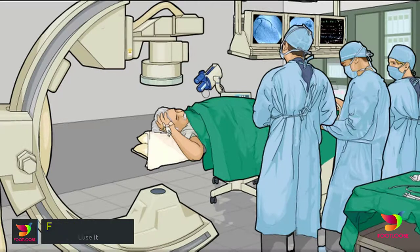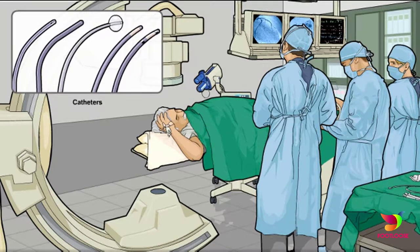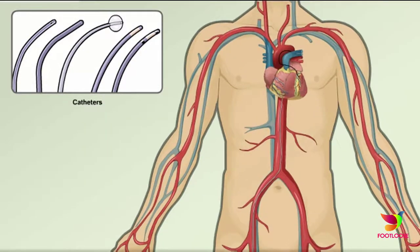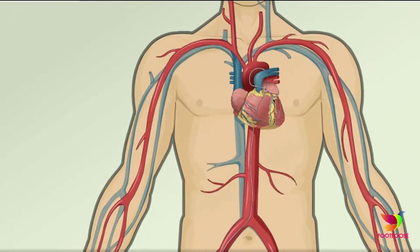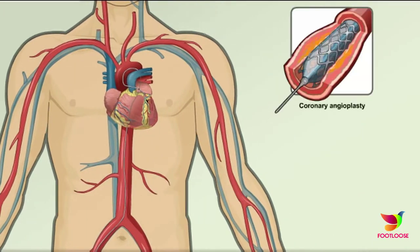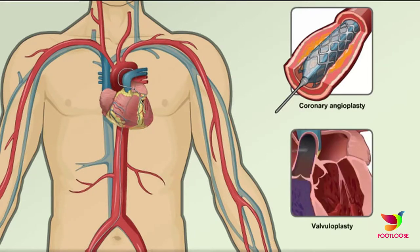Why do I need heart angioplasty and stent placement? The procedure is commonly done when a fatty substance known as plaque attaches to the walls of an artery. This is a condition known as atherosclerosis. The buildup of plaque causes the inside of the artery to narrow, restricting blood flow.